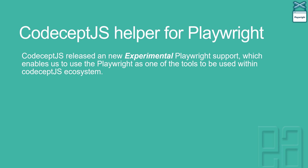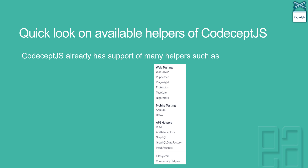If you ask what are the available helpers that CodeceptJS supports by default, these include WebDriver, Puppeteer, Playwright, Protractor, TestCafe, and for mobile testing they support Appium and Detox. Similarly for API helpers they have many other supports. CodeceptJS has many different helpers and helpers is the core concept of CodeceptJS itself.